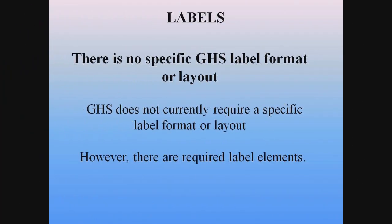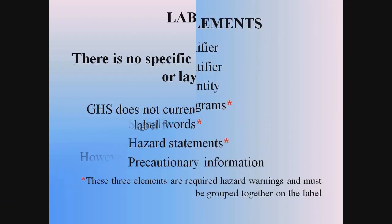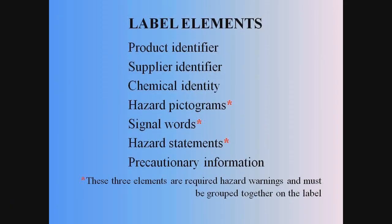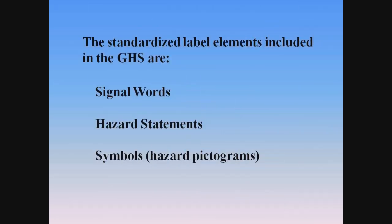There is not a standard format for the GHS label. However, there are required label elements. The GHS label elements marked with an asterisk have been standardized and are directly related to the hazard level. The other label elements are defined based on common definitions. But three elements — hazard pictograms, signal words, and hazard statements — are all hazard warnings and are required to be grouped together on the label. The symbols, signal words, and hazard statements have all been assigned to specific hazard categories and classes.